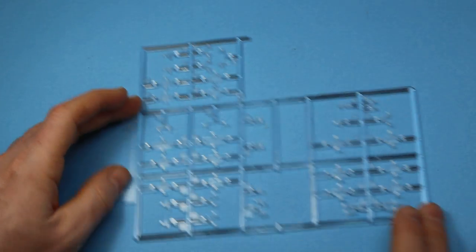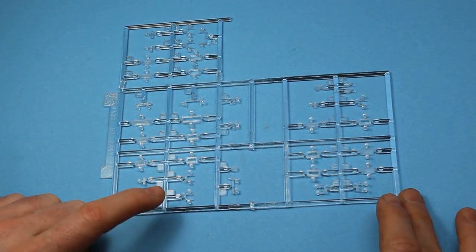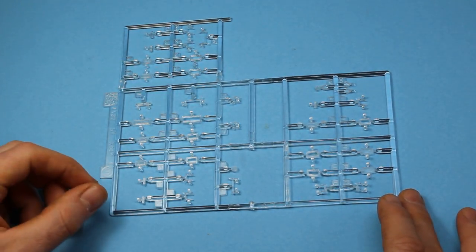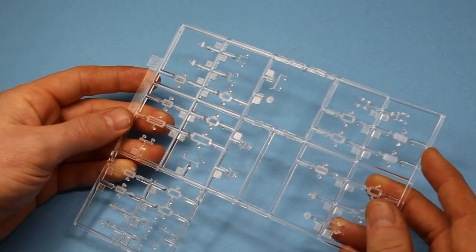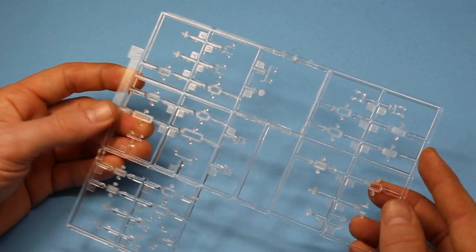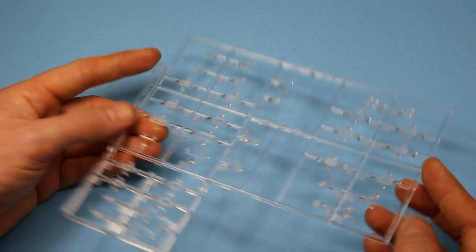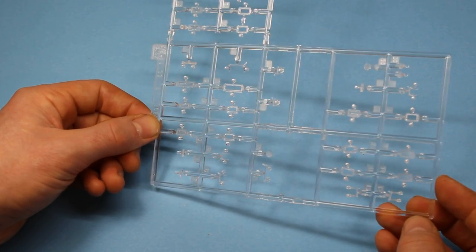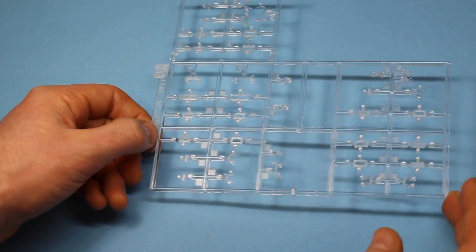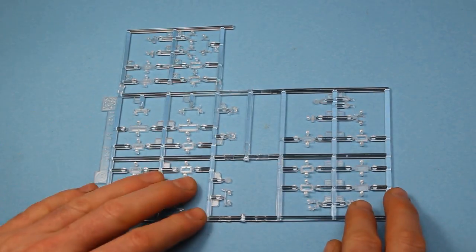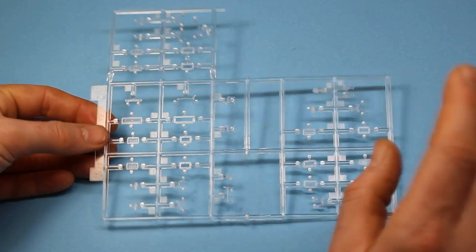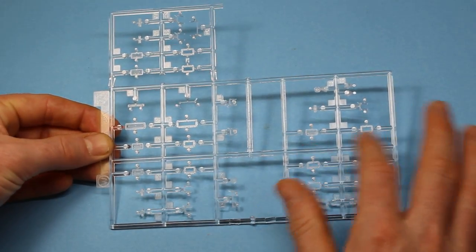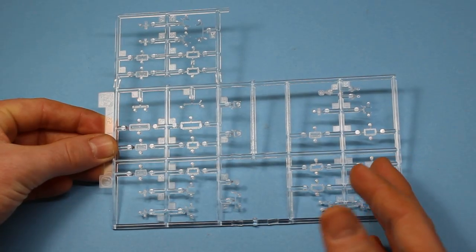Then we've got one sprue of clear parts here which make up the vision blocks for the outside and the interior parts as well, so that gives them a lot of detail. These have come about mainly because of the interior kits that were produced for the Panzer 1 early on in the Dragon range, so they've just carried that through. You don't need that interior detail for these obviously, but it's quite nice if you want to open them up. You see something from the outside, you see part of the vision block from the inside as well, so it's a good option.